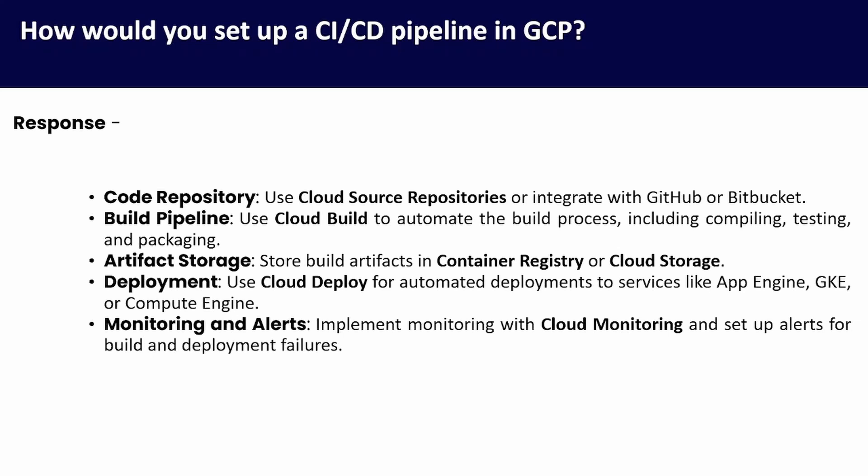How would you set up a CI/CD pipeline in GCP? The steps are: code repository — use Cloud Source Repositories or integrate with GitHub or Bitbucket; build pipeline — use Cloud Build to automate the build process including compiling, testing, and packaging; artifact storage — store build artifacts in Container Registry or Cloud Storage; deployment — use Cloud Deploy for automated deployments to services like App Engine, GKE, or Compute Engine; monitoring — implement monitoring with Cloud Monitoring and set up alerts for build and deployment failures.